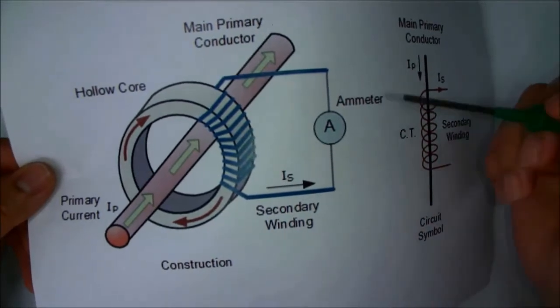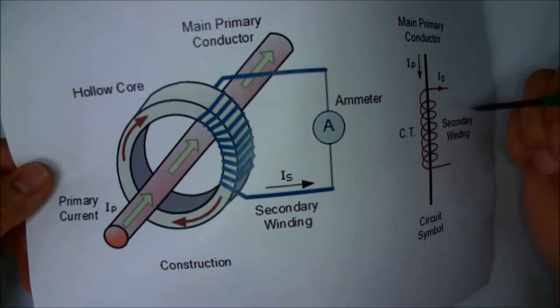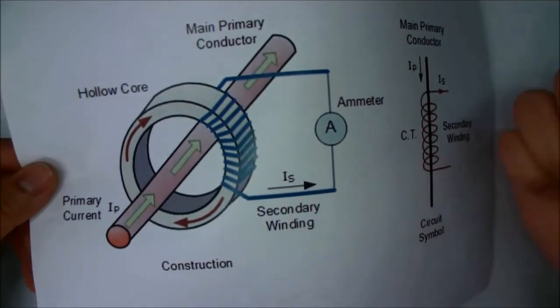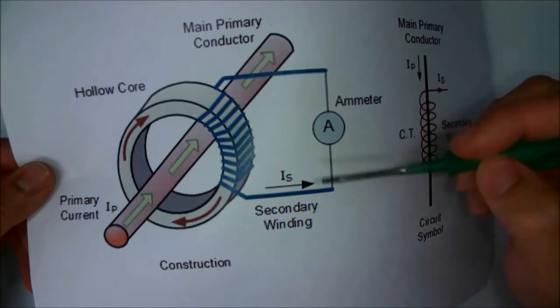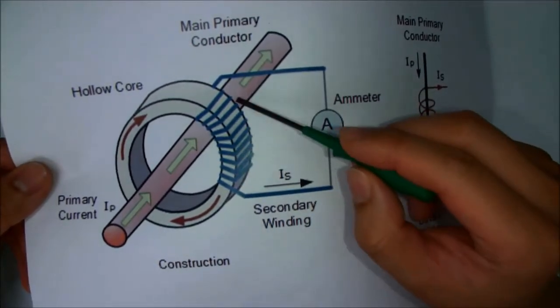However, during an open circuit, there will no longer be a finite resistance. And with that, with the current being a constant value because it's a current transformer, there will be an infinite or very large voltage across here, which will heat this CT up and destroy it.